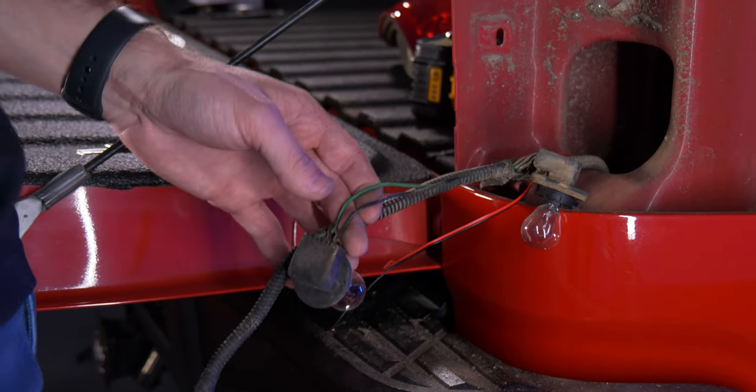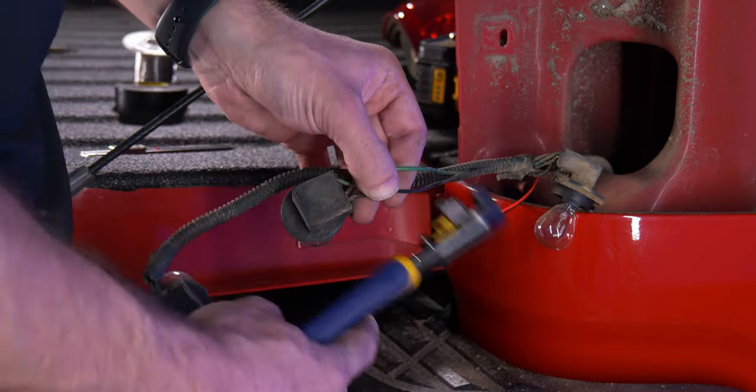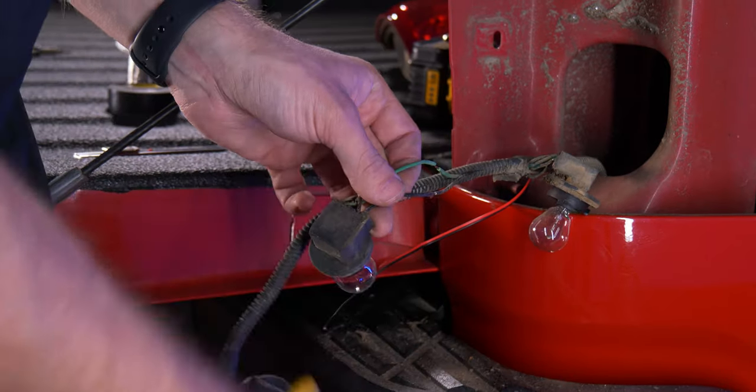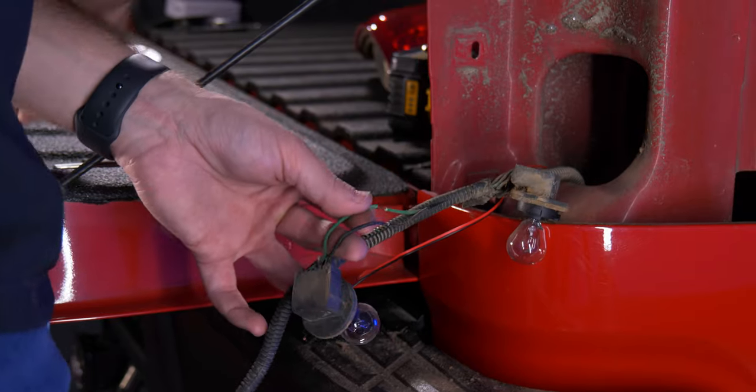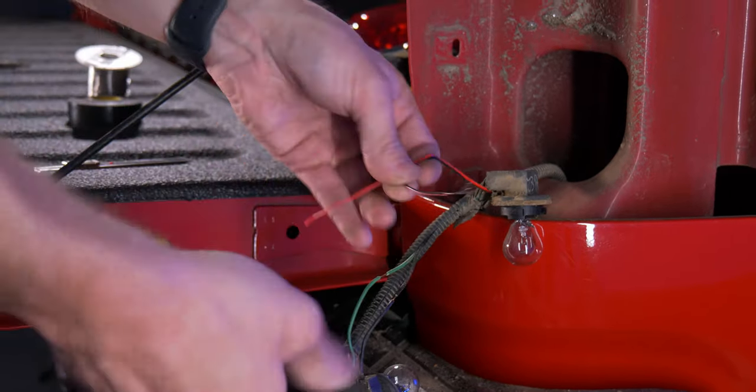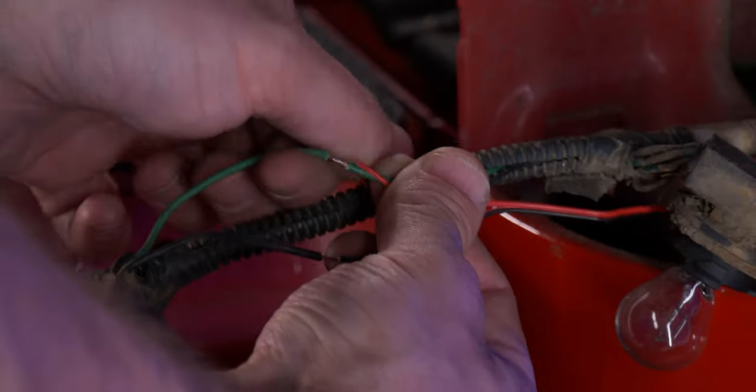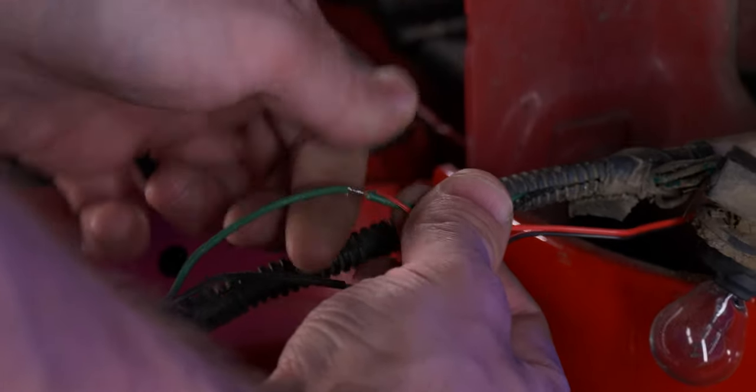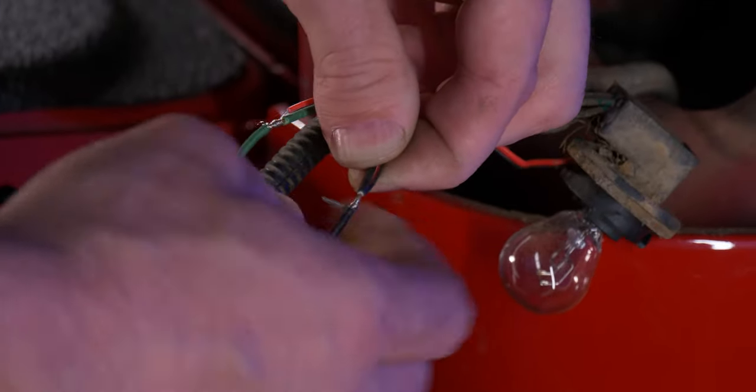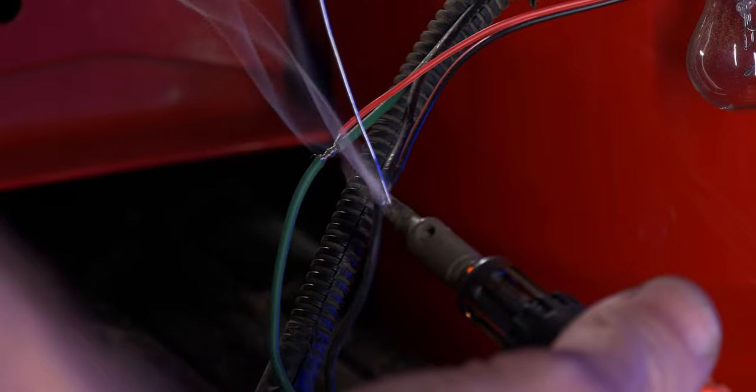Now since we know these are the wires we want to tie into, we can strip them back. There are many different ways to connect to wiring today. I'm going to solder. You can use T-taps, you can use whatever you've got at home to make this connection. Now you want to take your red wire coming from the Xenon Depot harness, connect that to the green and connect the black wire to the factory black wire. Go ahead and solder up your wiring.